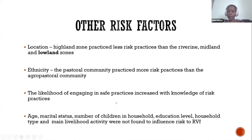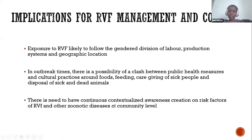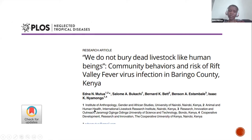However, age, marital status, number of children in the household, education level, household type, and main livelihood activities were not found to influence risk to RVF. In terms of implications for RVF management and control, we established that RVF exposure is likely to follow a gendered division of labor pattern, production systems, and geographic location. We also established that in outbreak times there is a possibility of a clash between public health measures and cultural practices around foods, feeding, caregiving of sick people, and disposal of sick and dead livestock. Continuous contextualized awareness creation on risk factors of RVF and other zoonotic diseases will be useful. This is an open-access paper.